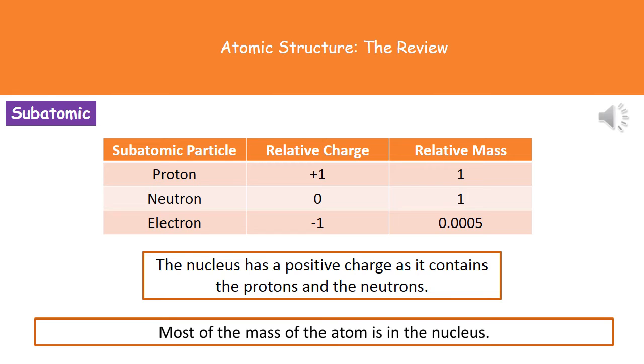Our neutron, just think the word neutral there for the charge. So neutrons have no charge and they've got a mass of one as well. And then finally our electrons, these have a charge of minus one and their mass is very small, it's 0.0005.